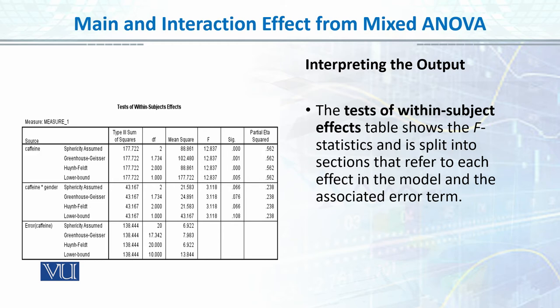The main effect of caffeine is assumed sphericity met. We will quote this value — this is the main F-value, this is the degrees of freedom for between groups, and this is the significance value. We remember that when the significance value is 0.00...